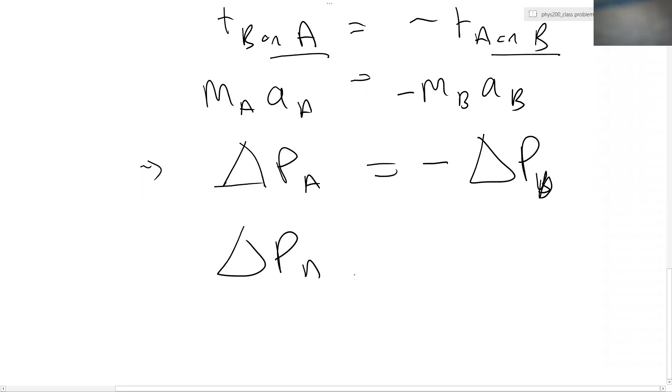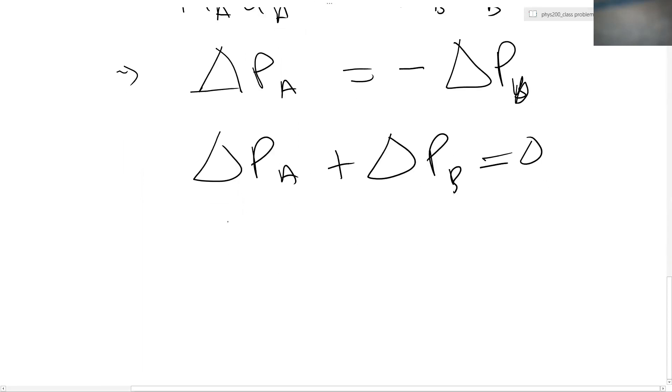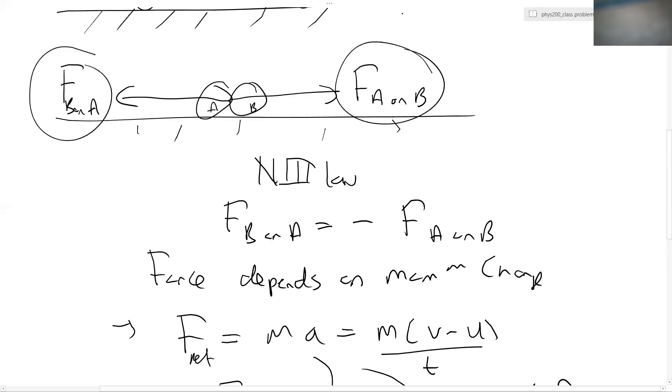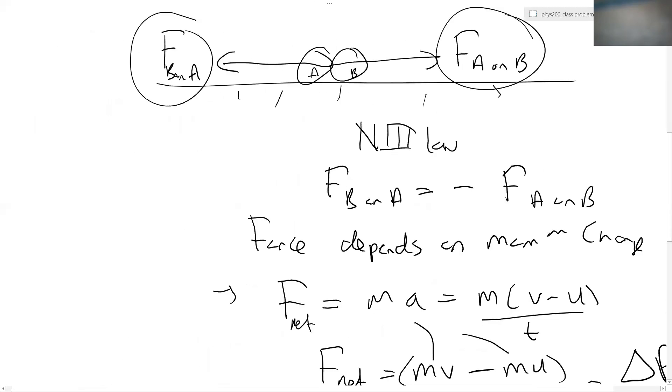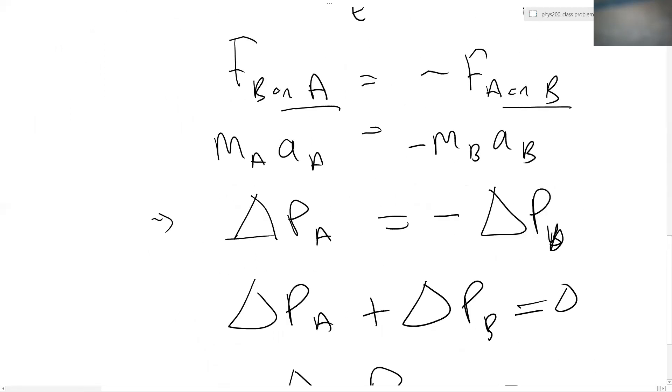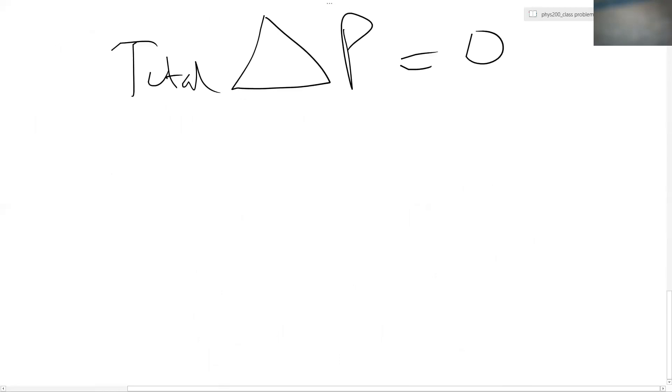So delta P A plus delta P B must equal zero, which means that the total delta P is zero. Essentially, you're saying that the momentum change of A is equal to the momentum change of B. It's exactly the same as saying the force of B on A is equal to minus the force of A on B. But this, the fact that the total momentum, this change is zero, means that the total momentum is constant, which means it never changes.